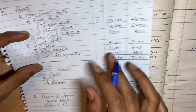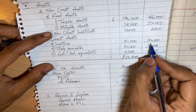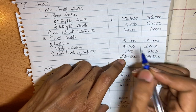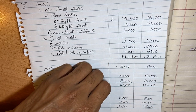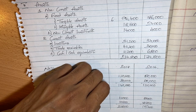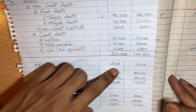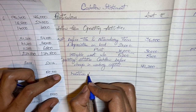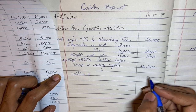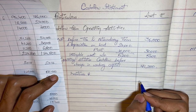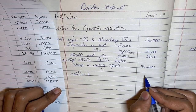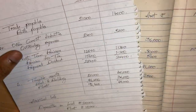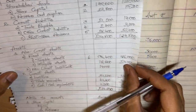Starting with current assets: inventories were 34,000 at the end of last year and have come down to 31,200 this year. The decrease in inventories means we have been selling stock, which means there is a cash inflow. So we add 2,800 for the decrease in inventories.